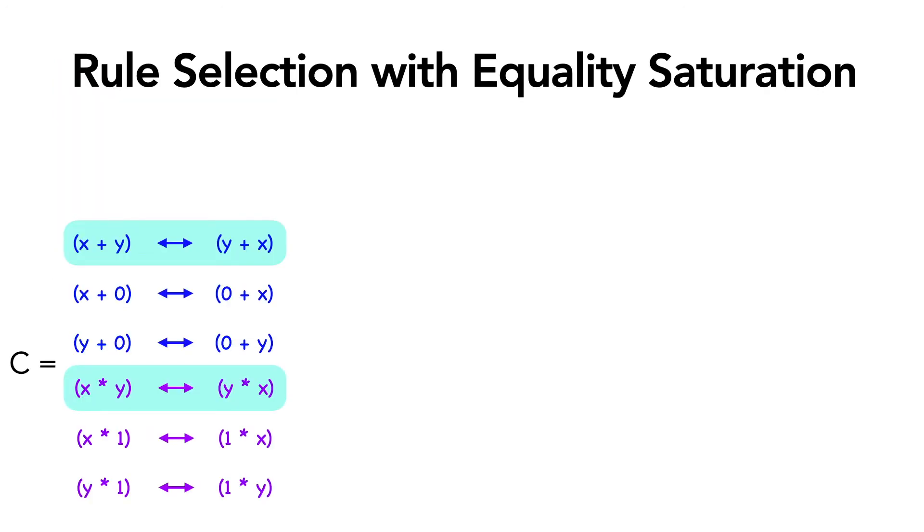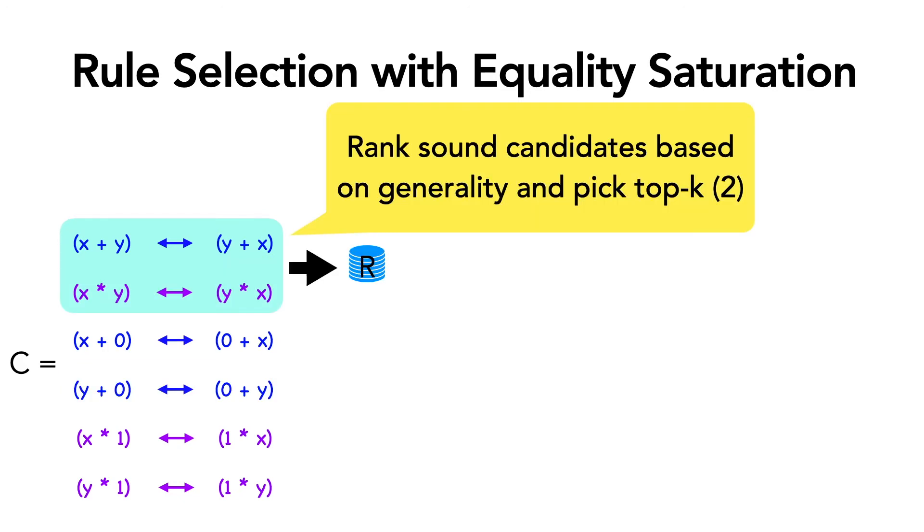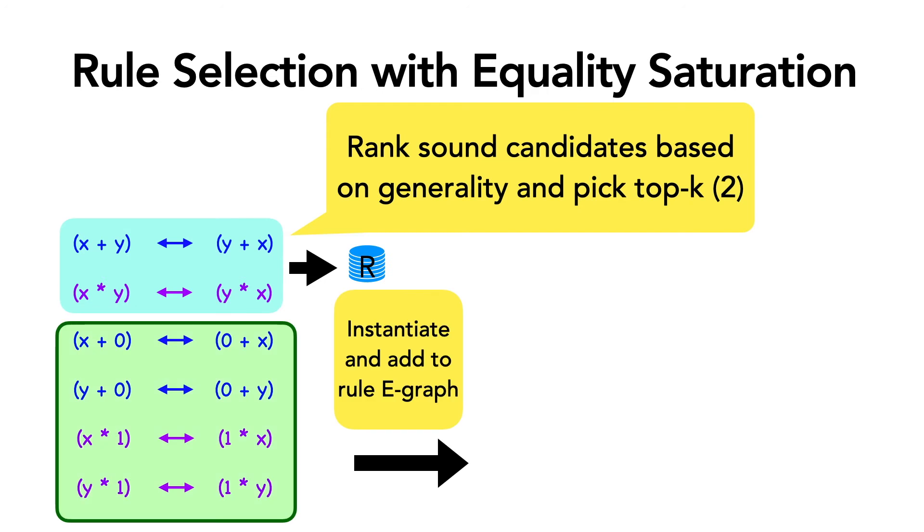So for example here, Ruler's candidate generation has found three commutative rewrites for addition and three for multiplication, but only two of them are actually useful because the rest are just special cases. So to select a good set of rules, Ruler will first use a cost function that prefers generalized rules to rank the candidates. It then picks some top K rules from the candidate pool, and here top K is set to 2.